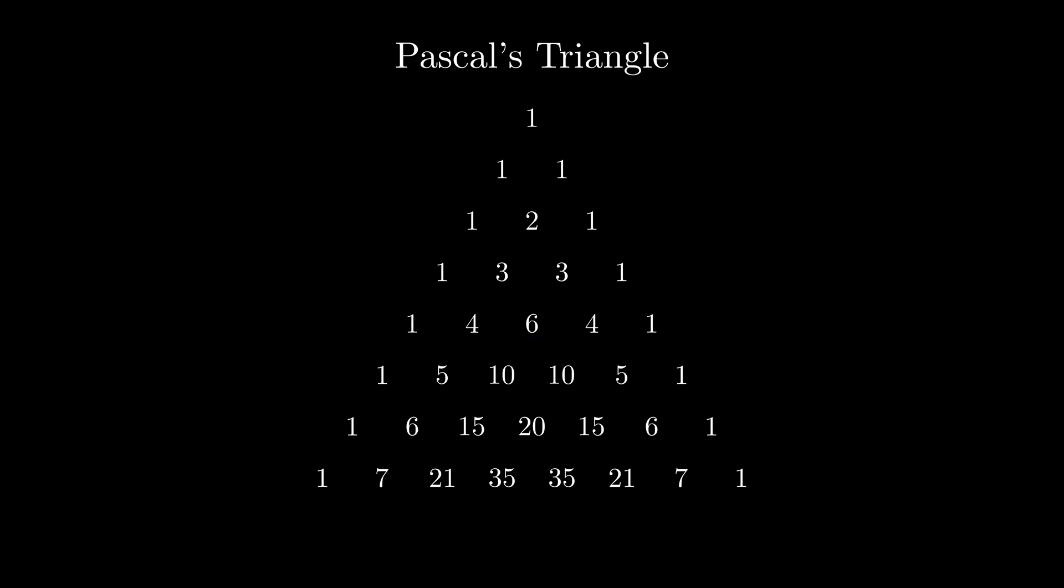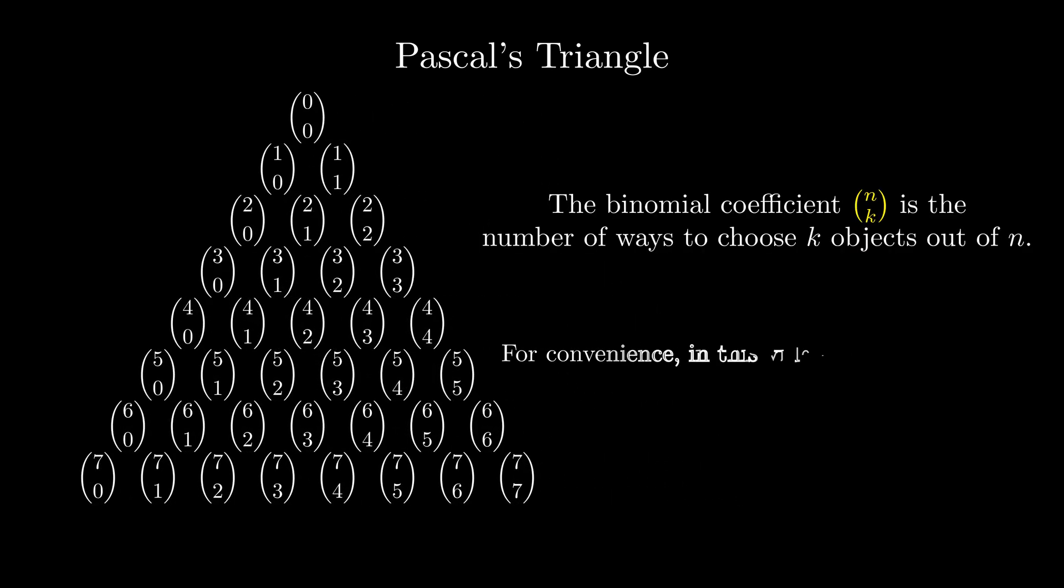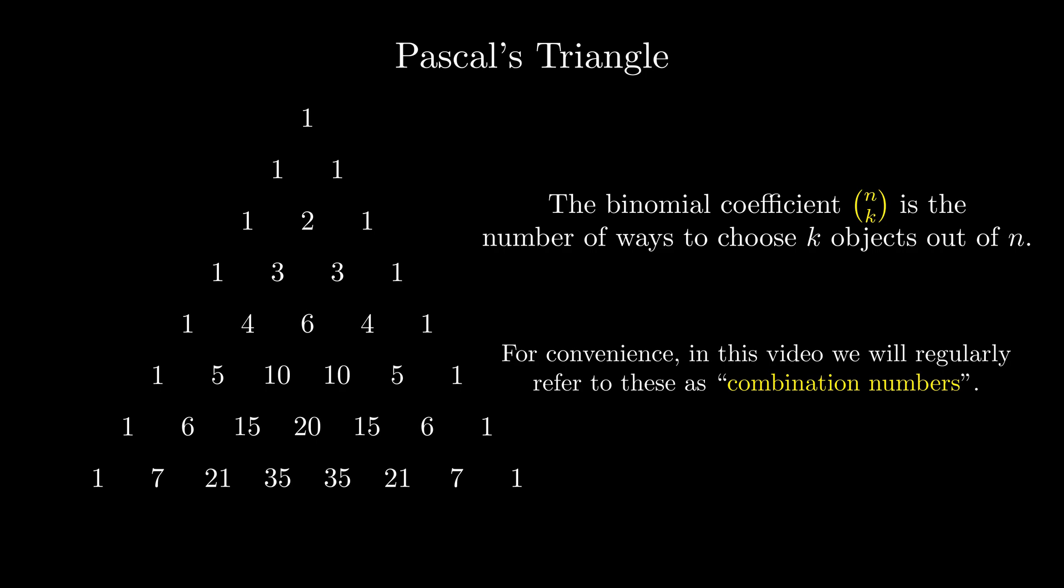In one of my previous videos, I mentioned how the numbers of Pascal's Triangle form the combination numbers, the number of ways to choose k objects out of a total of n. Today, we will take a deep dive into one of these patterns. If you're not comfortable with the idea that the numbers of Pascal's Triangle represent combinations, I recommend you watch my previous video first, since it's a concept we'll be applying in this video.